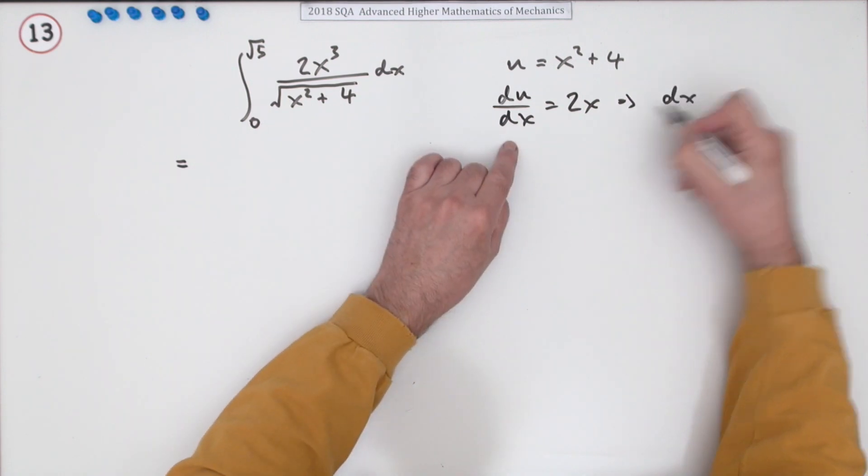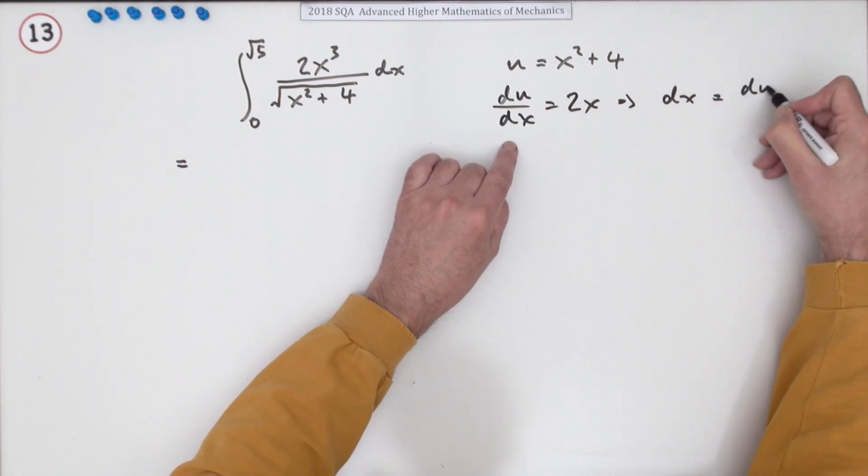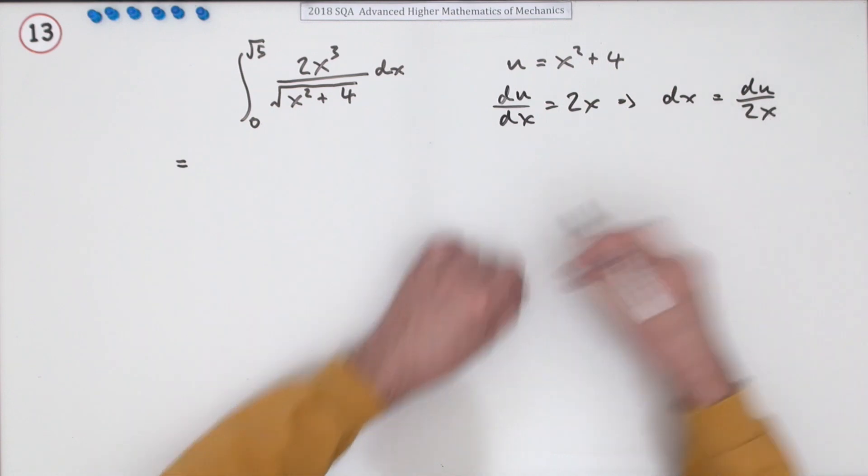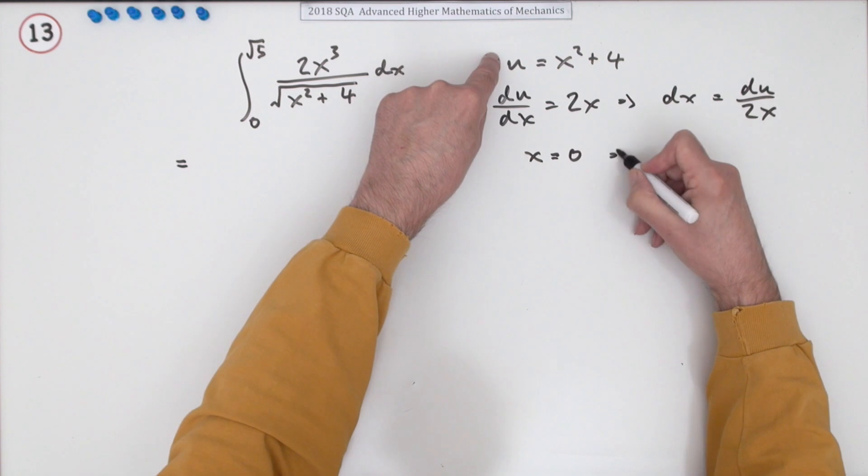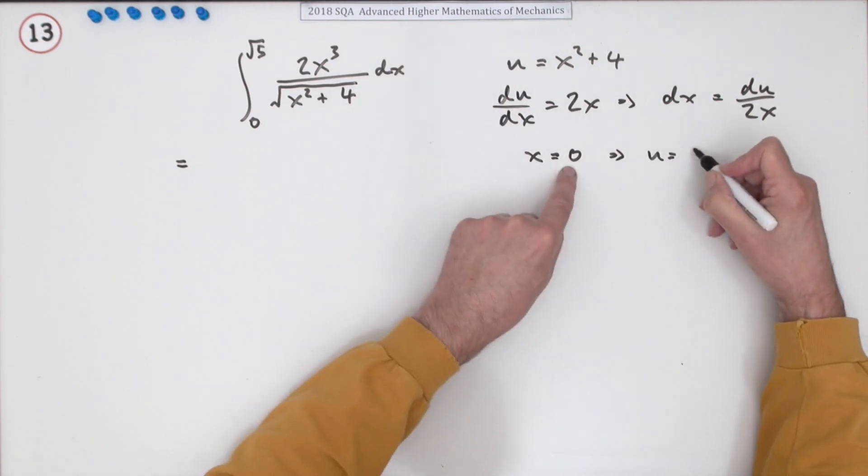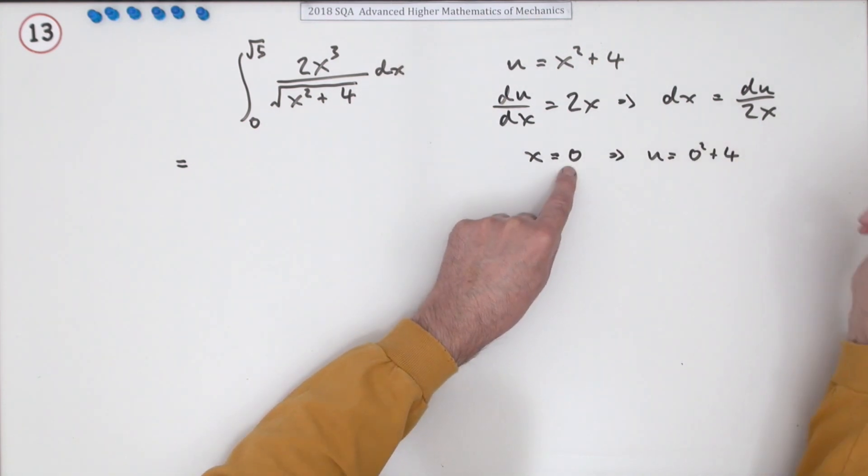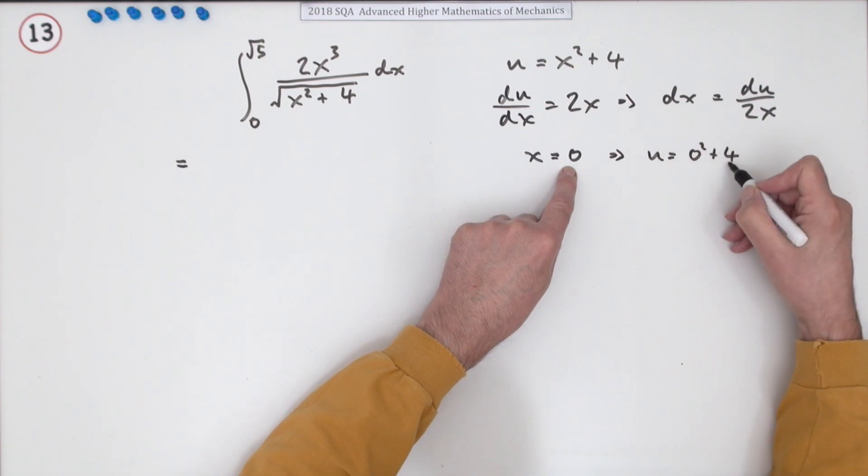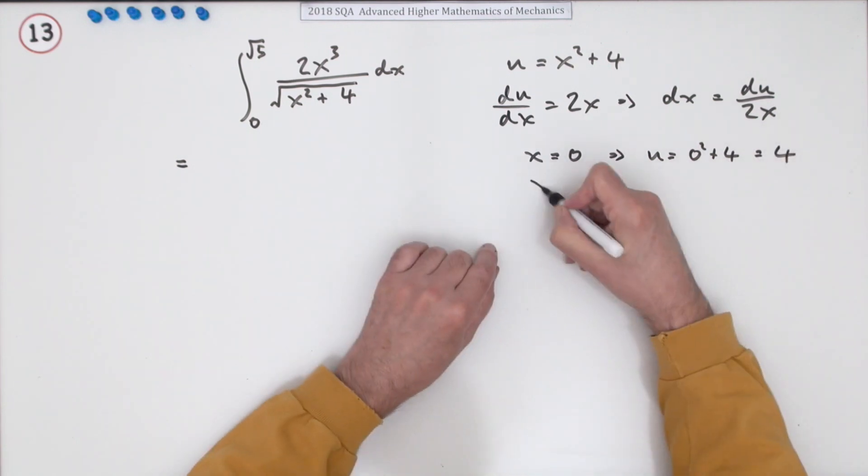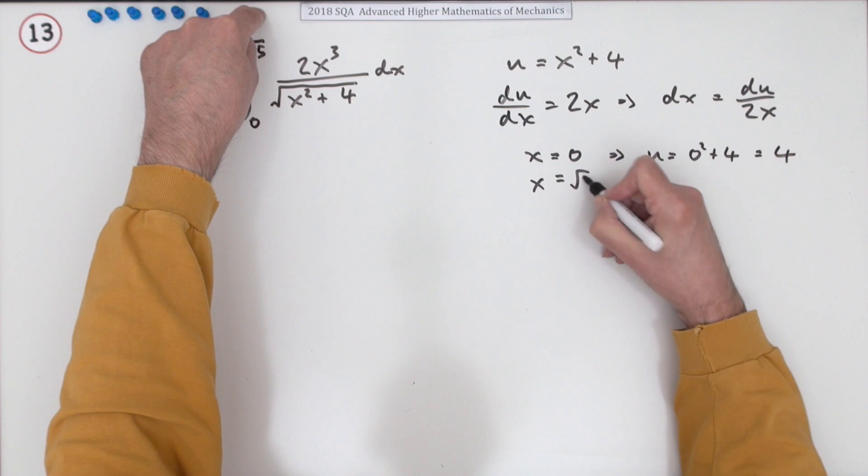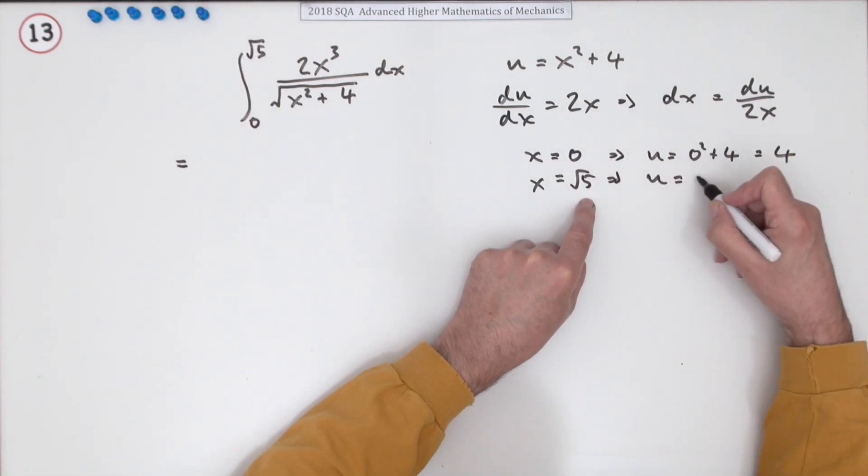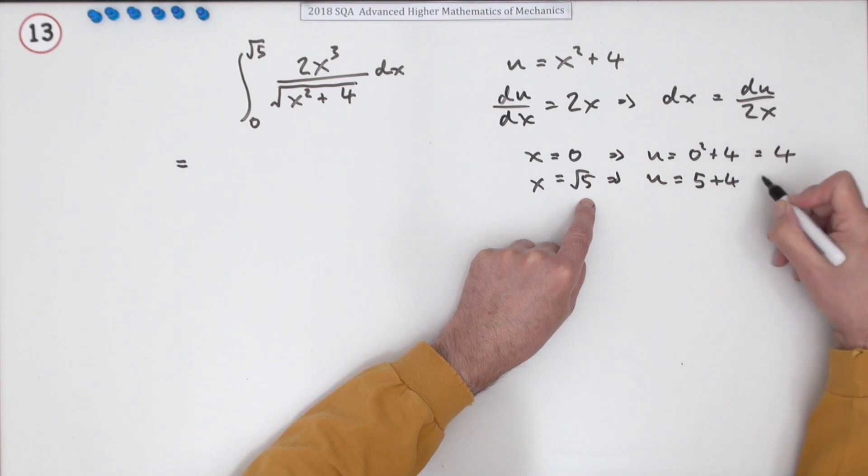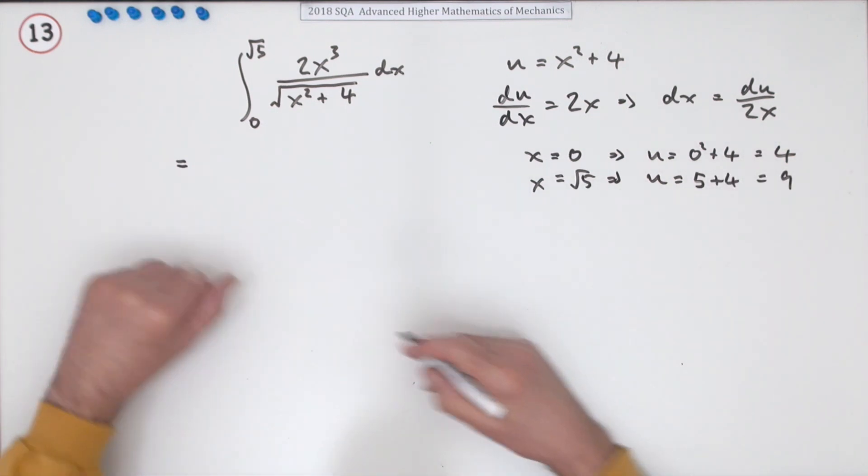About the limits: when x is 0, according to this, u will be 0² + 4, which is 4. When x is √5, u will be (√5)² + 4, which is 5 + 4 = 9. Now you're ready to go.